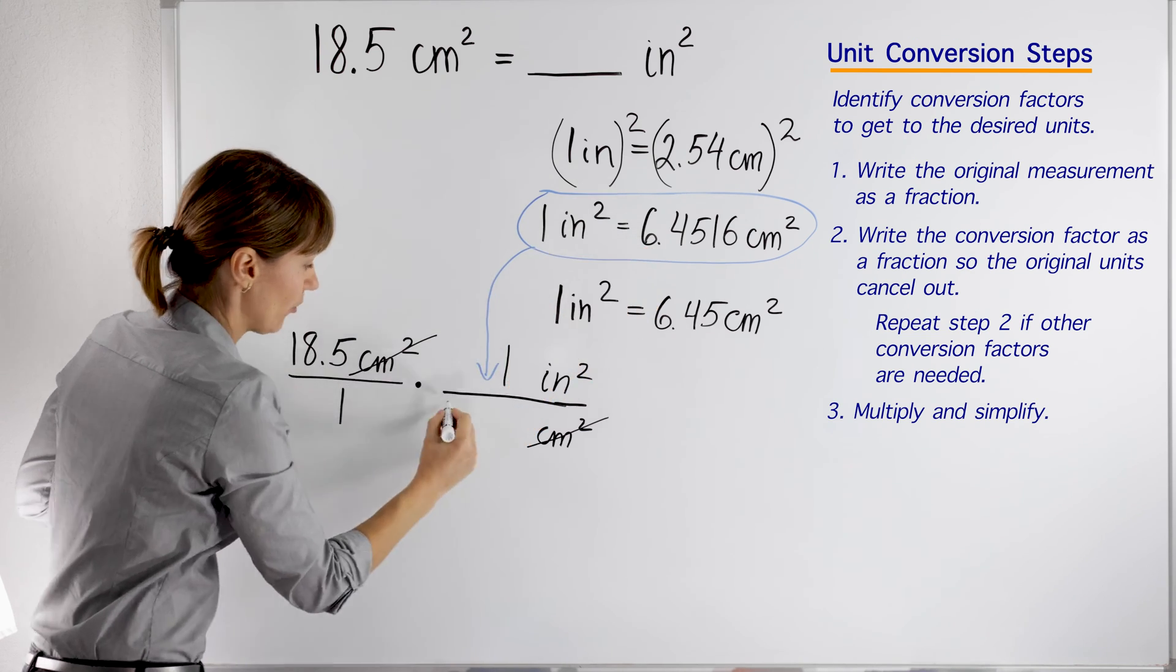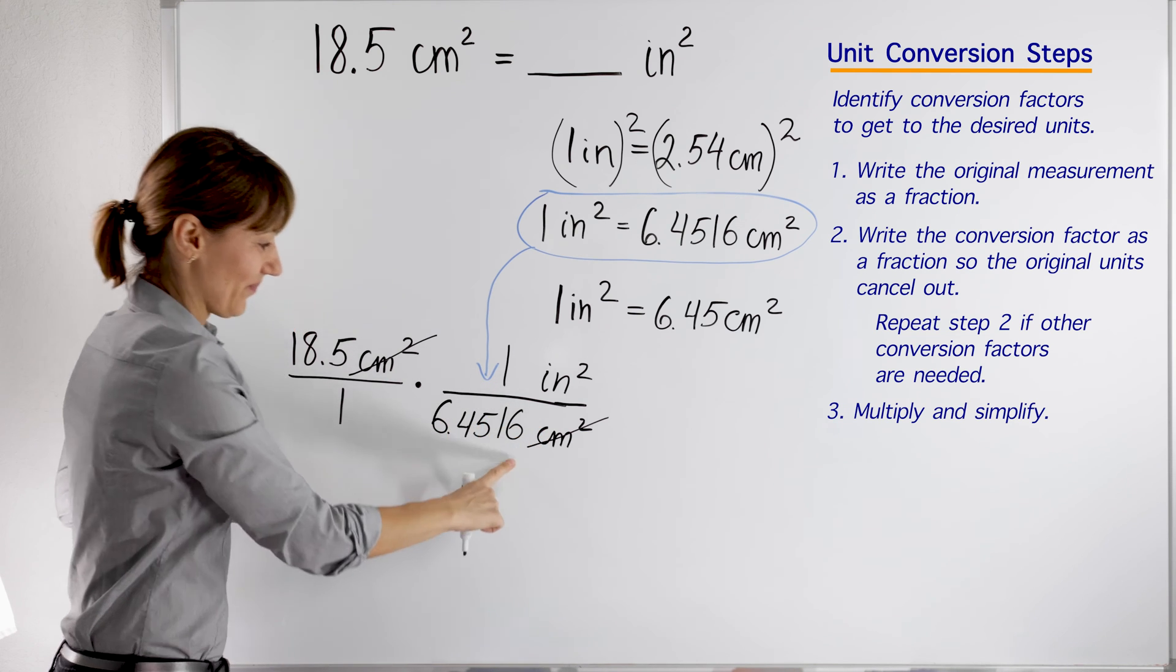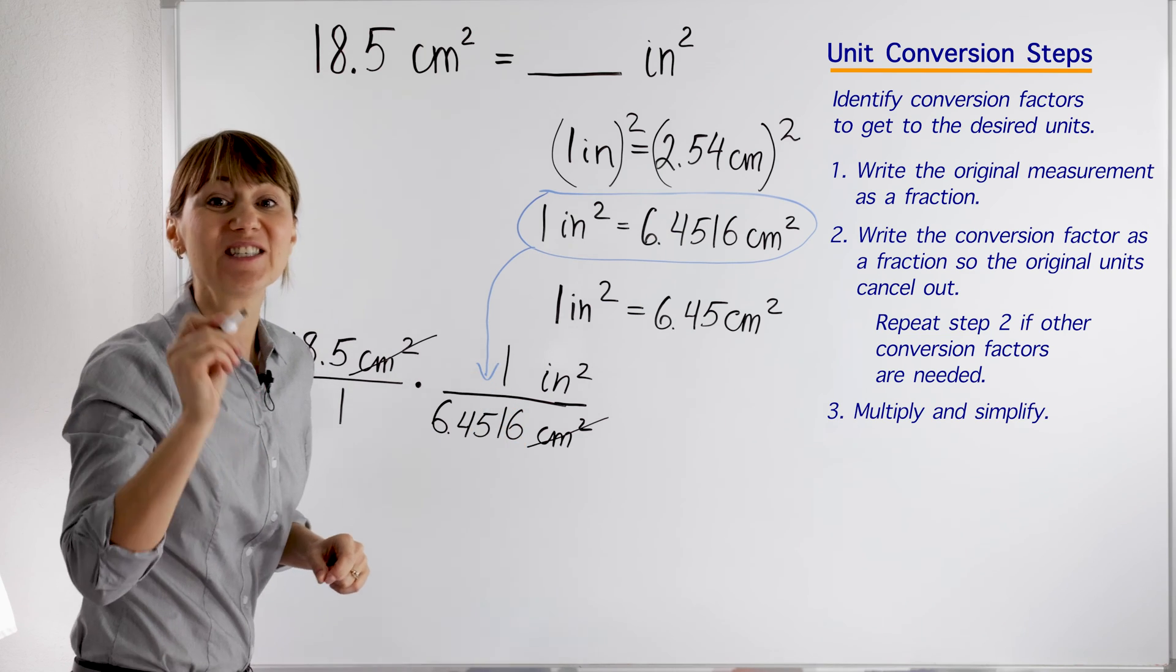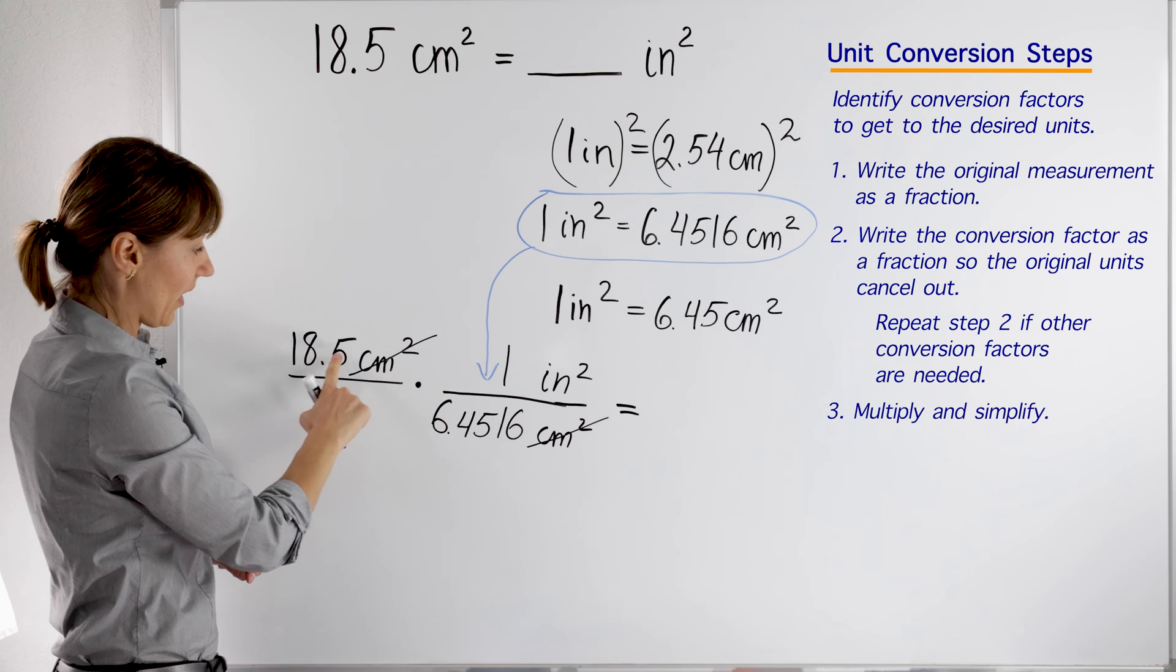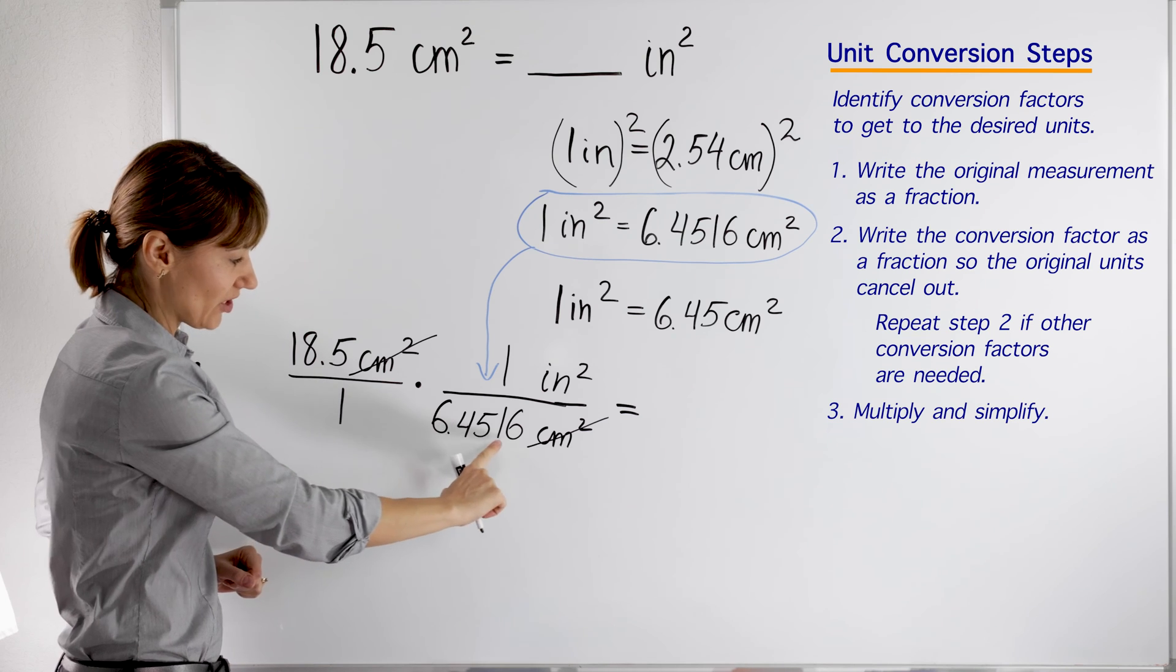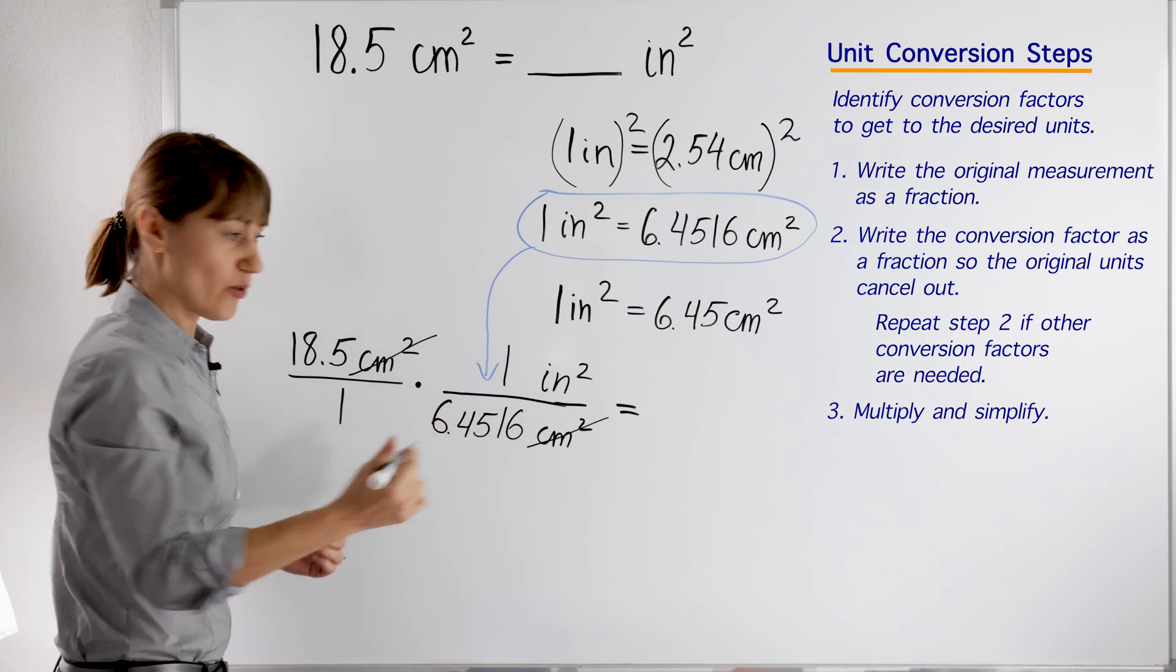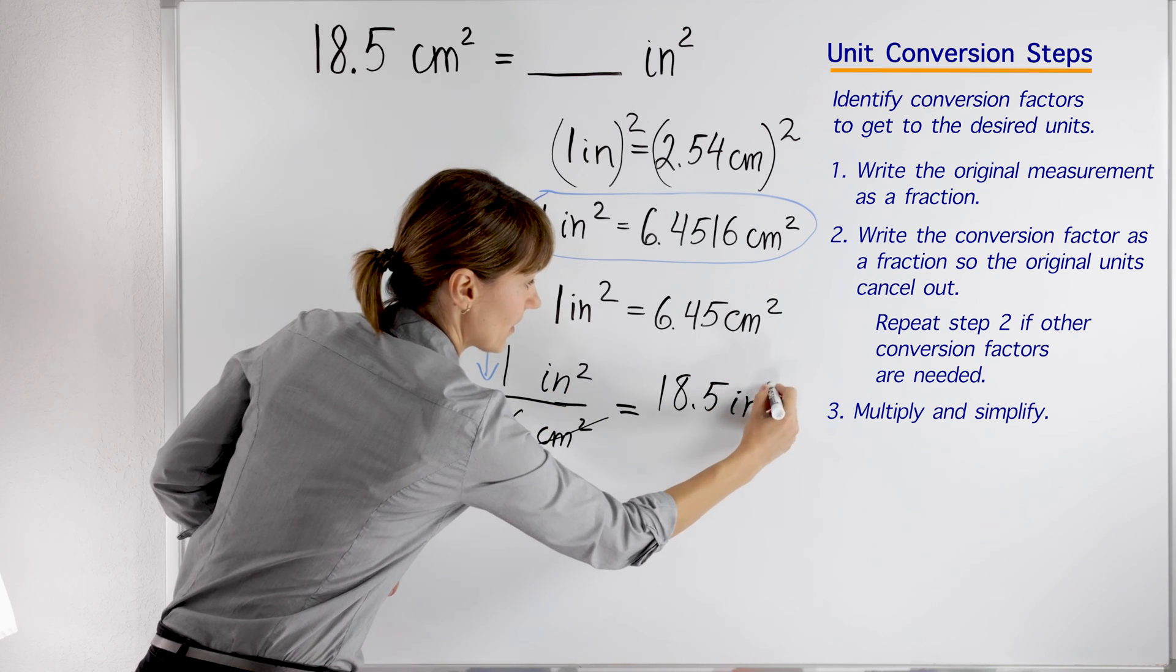How do I know I'm setting it up correctly? I'm setting it up so my original units cancel out. I'll put the numbers from the conversion factor: I'll put one here and 6.4516 here. Very good. Your original units canceled out and you're left with inches, and you're ready to do the math. What do we do? We multiply the numbers on top in the numerator, then we multiply the numbers in the denominator, then we do division. So 18.5 times 1 will be 18.5 inches squared, right?